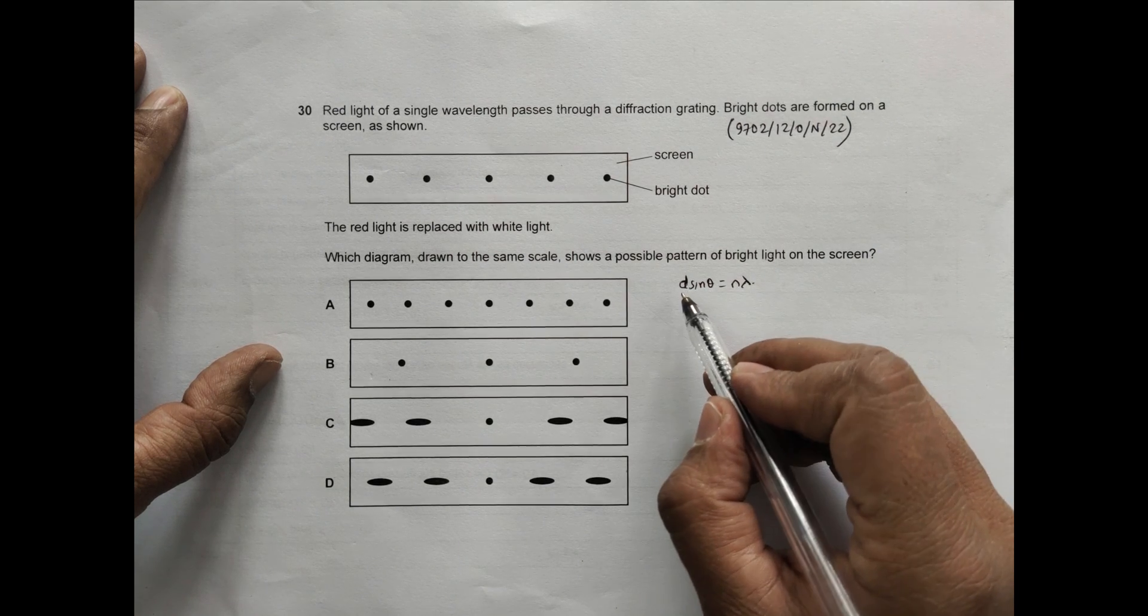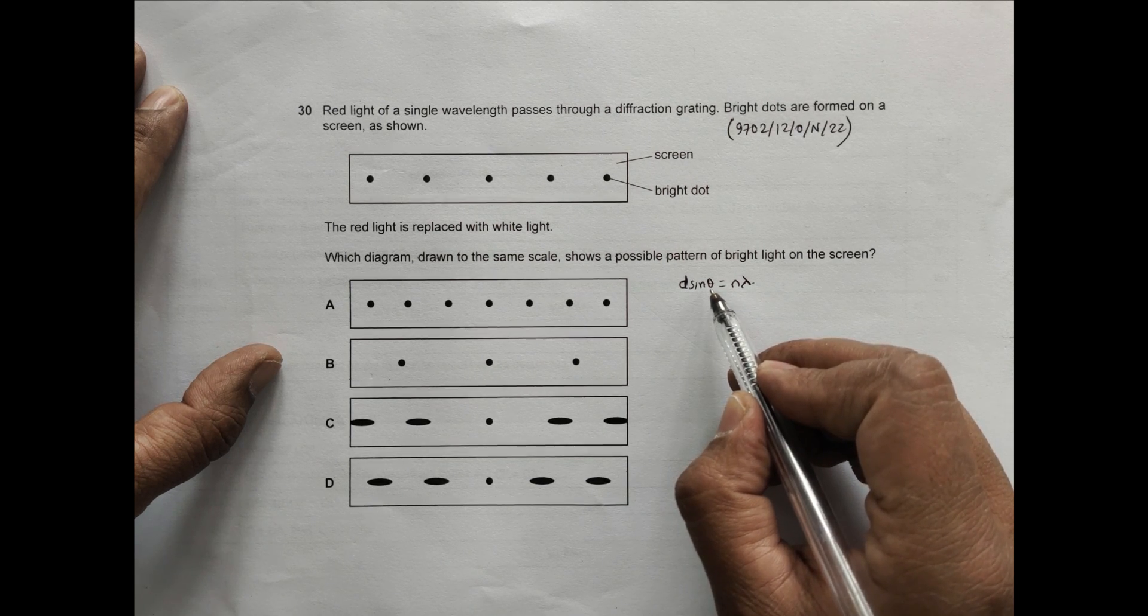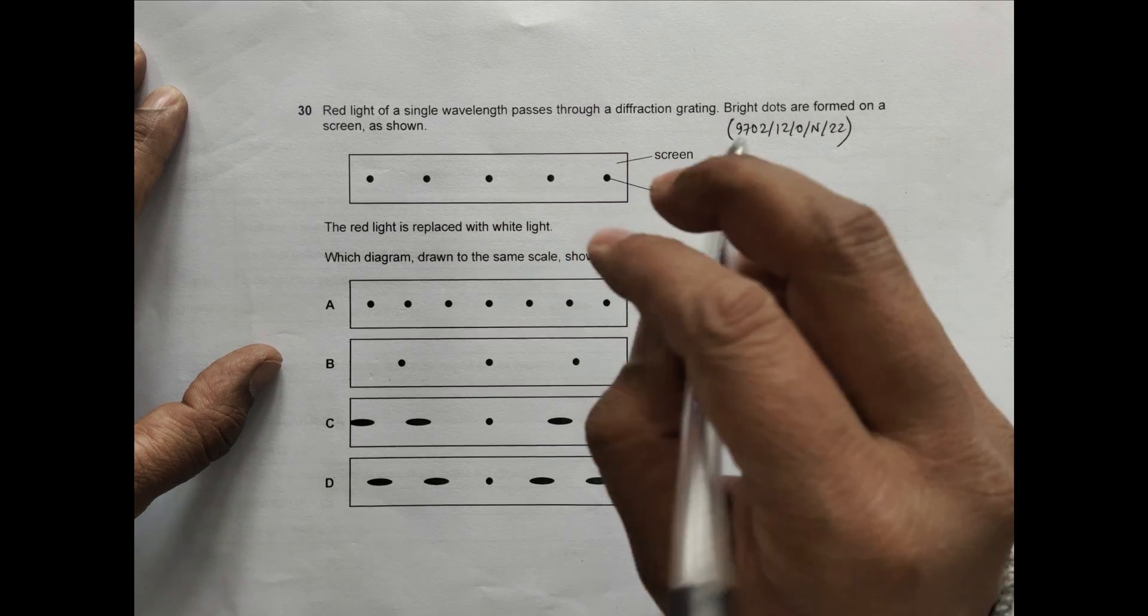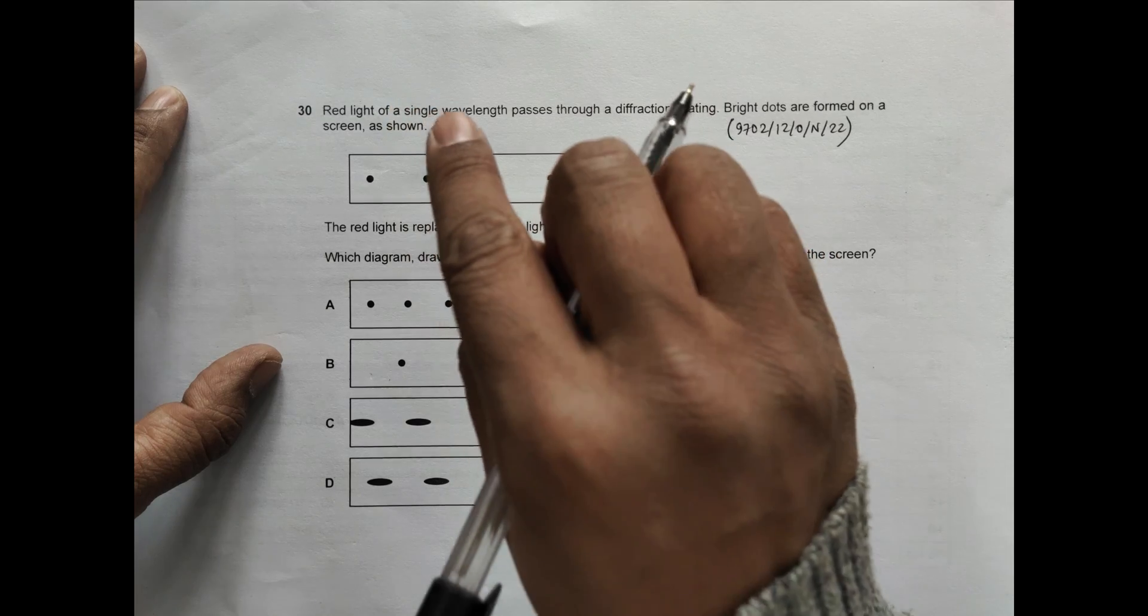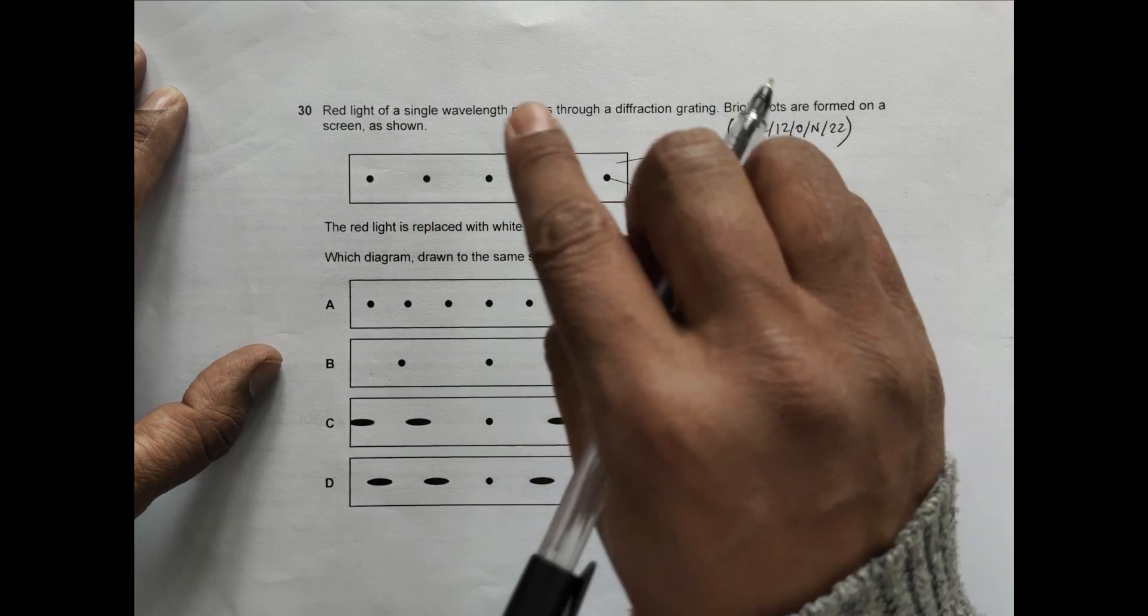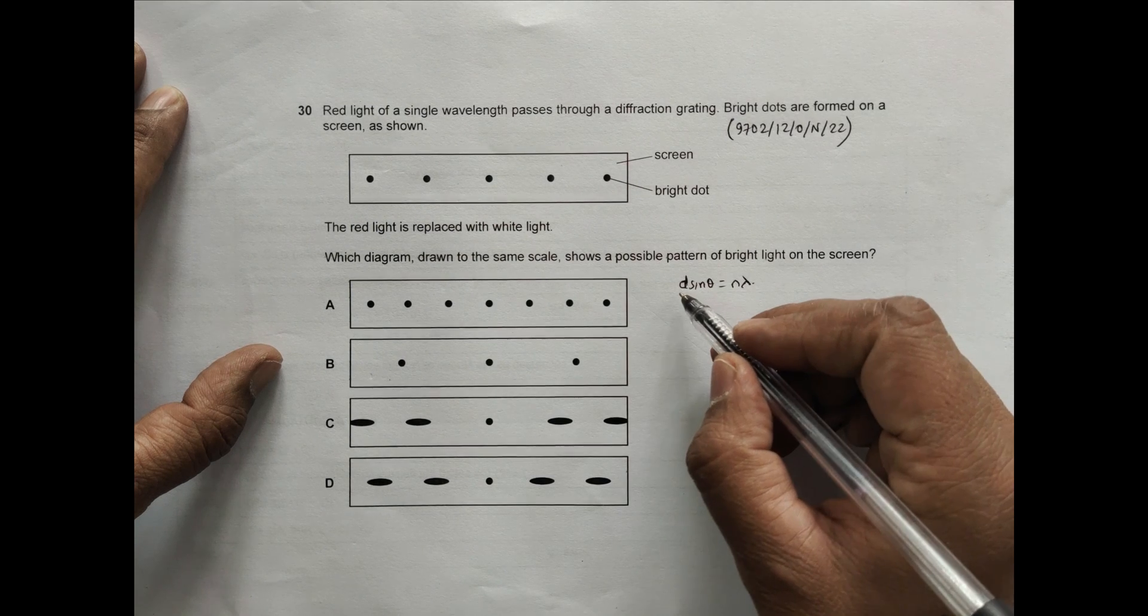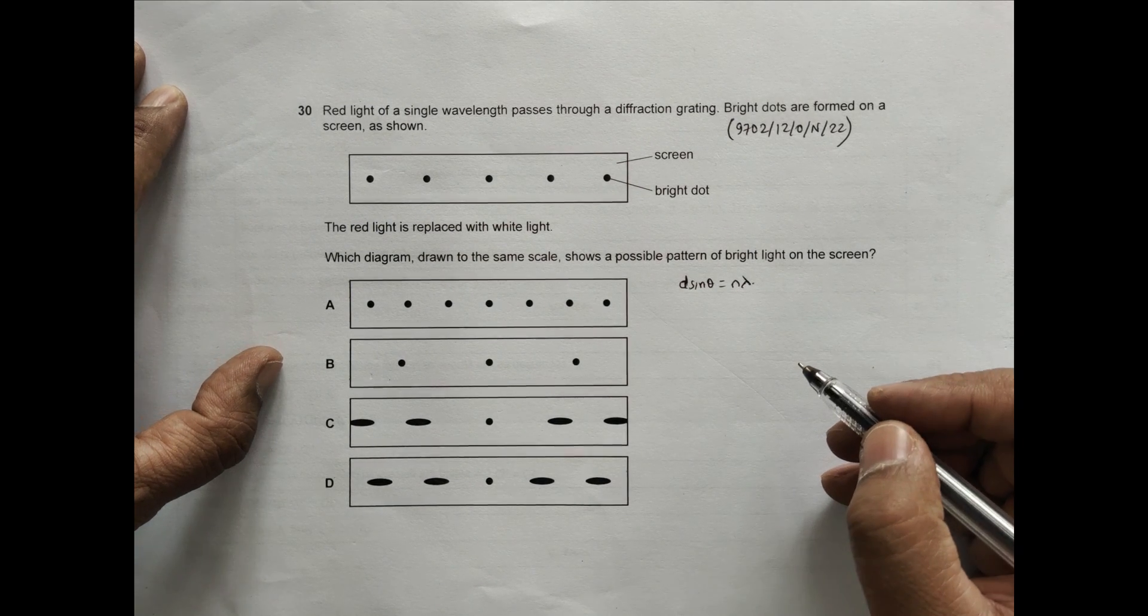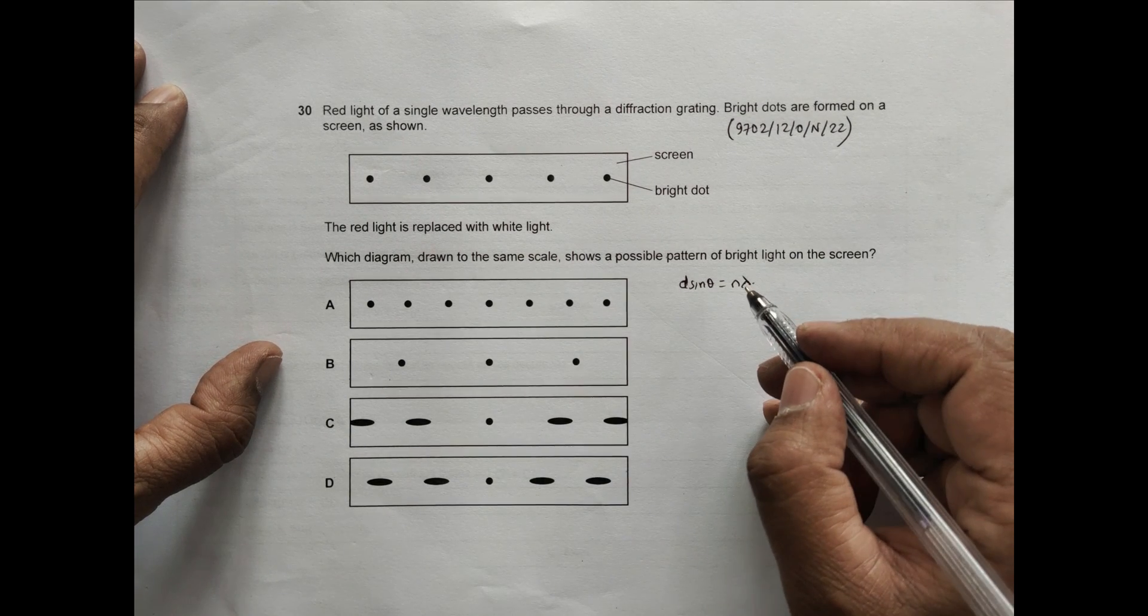If the fringe separation is d, if θ is the angle formed by the light ray with the original direction, we have to fulfill this condition to have a bright spot. When we use white light, we are using different wavelengths.